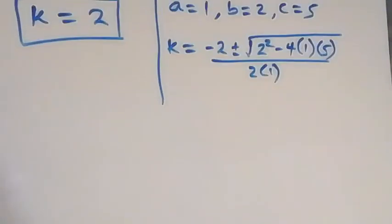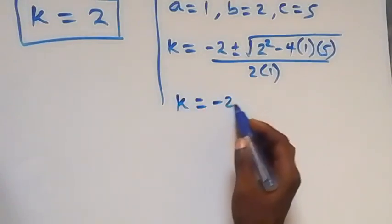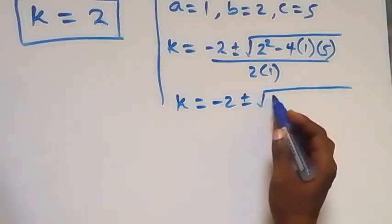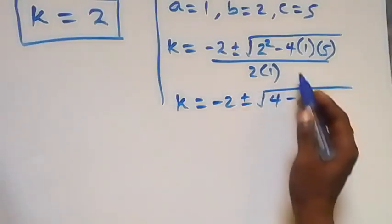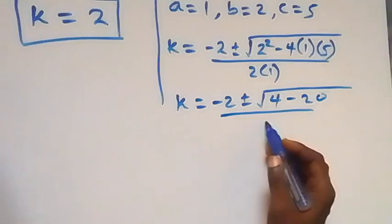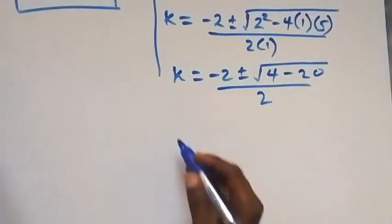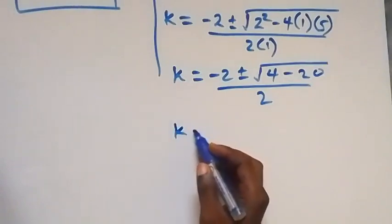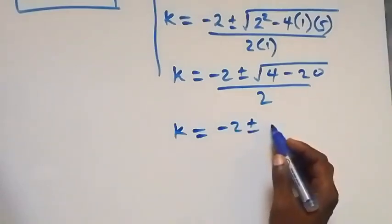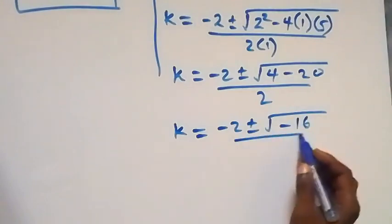And when we solve this, this gives us k equals to minus 2 plus or minus the square root of 4 minus 4 times 1 times 5, that's 20, all over 2. This is the same thing as k equals to minus 2 plus or minus square root of minus 16, over 2.